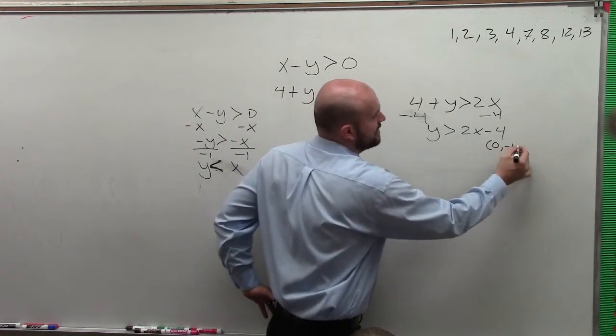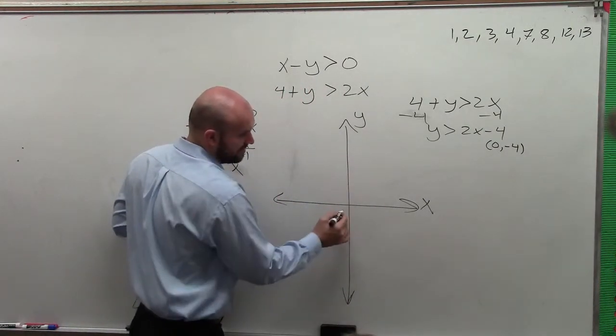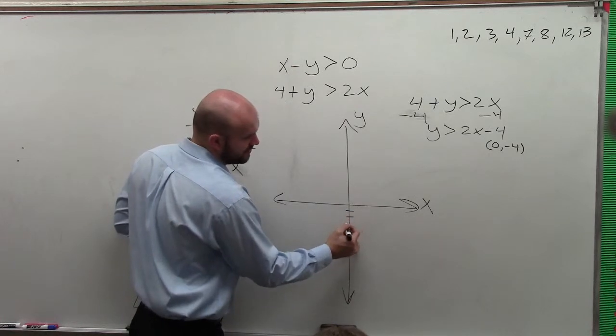So let's graph this one first. My y-intercept here is negative 4. So the coordinate point is 0, negative 4. So I go ahead and plot that point first. 0, not left or right. The x value is 0, y value is 1, 2, 3, 4.